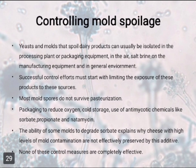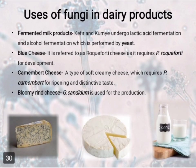Besides spoilage, fungi are also used in manufacturing dairy products. Fermented milk products undergo lactic acid fermentation and alcohol fermentation, performed by yeast. Blue cheese, referred to as Roquefort, requires Penicillium roqueforti for development. Camembert cheese is a type of soft cheese which requires Penicillium camemberti for ripening and distinctive taste. Bloomy rind cheese uses Geotrichum candidum for production. Some fungi are important in the development of surface-ripening soft and semi-hard cheese because of their synergistic relationship with Brevibacterium linens, Microbacterium, and lactic acid bacteria.